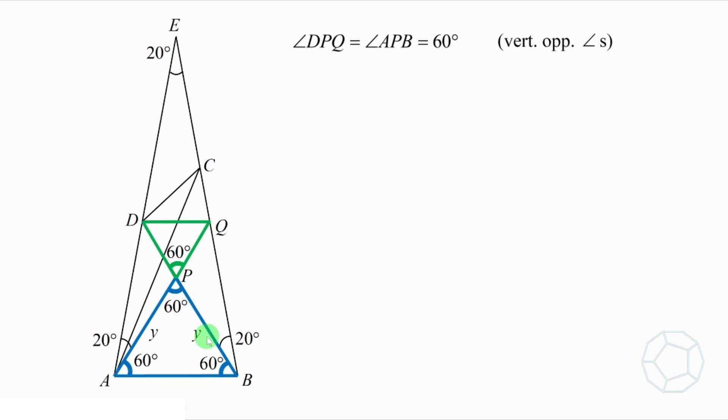Because AP and PB are both Y from part 1, and AQ and BD are both X from part 2. Therefore, DP and QP are both X minus Y. So we have an isosceles triangle.